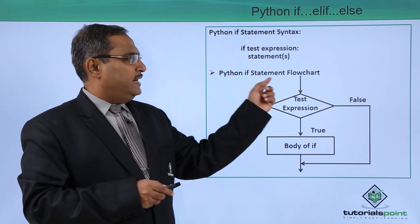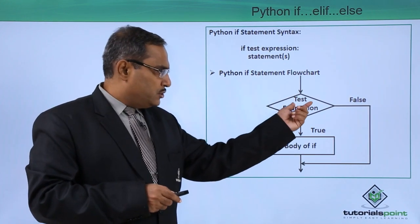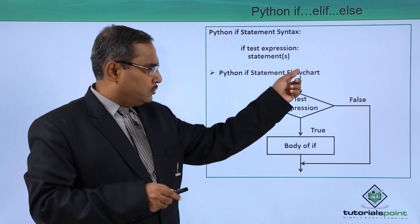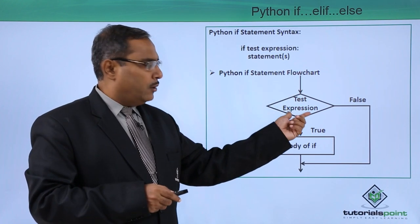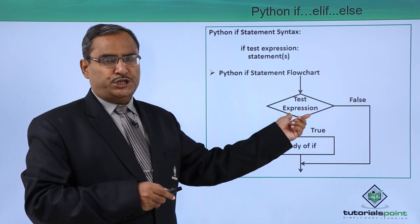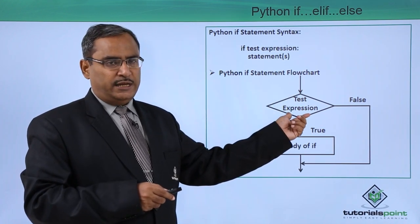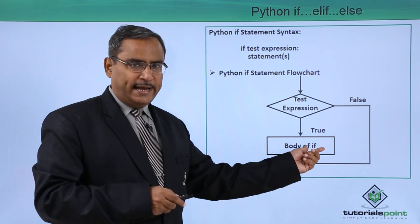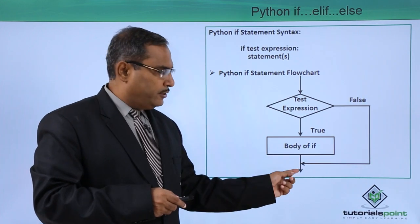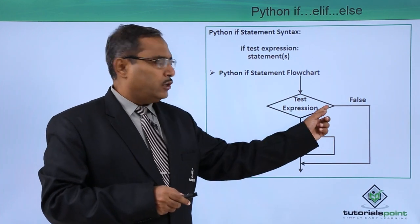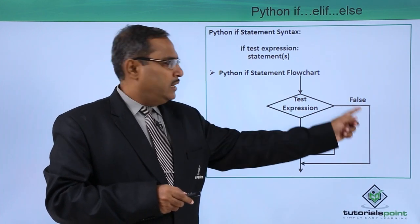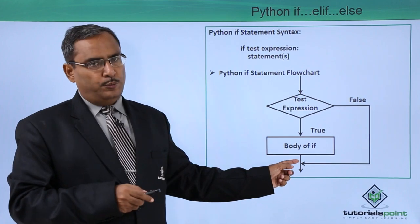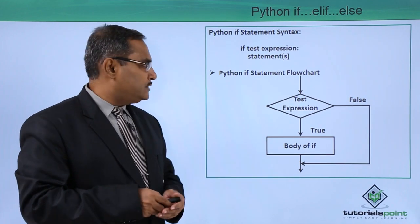Python if statement flowchart: the test expression is there, control comes down, and the condition is checked. If the condition is true, the body of if gets executed and then control comes out. If the condition is false, the body of if is bypassed.